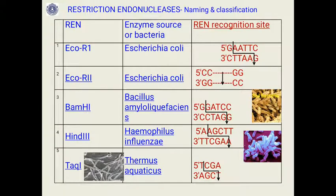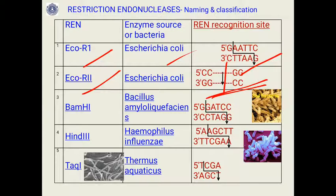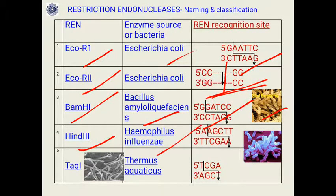Examples of restriction enzymes: EcoRI from Escherichia coli makes sticky ends; EcoRII makes a blunt cut. BamHI from Bacillus amyloliquefaciens has recognition site GGATCC and makes sticky ends. HindIII from Haemophilus influenzae has recognition site AAGCTT and also makes sticky cuts. TaqI, extracted from Thermus aquaticus, has recognition site TCGA and makes a sticky cut.